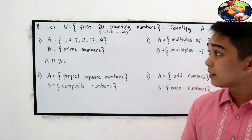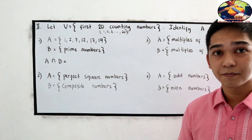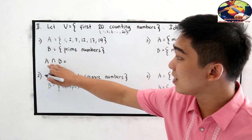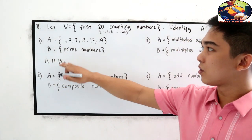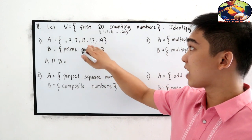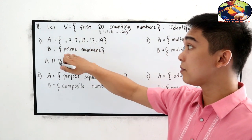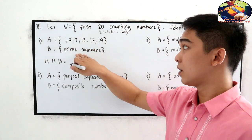Since you are done, now let's check number 1. A intersection B. So, A, 1, 2, 7, 12, 17, 19. And B, prime numbers.